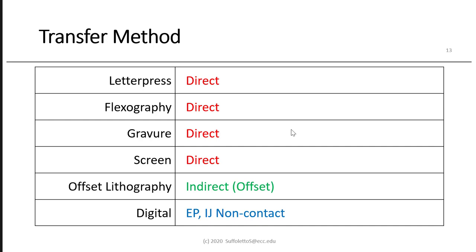For transfer method: letterpress, flexography, gravure, and screen printing are all direct. Offset lithography is indirect — 'offset' means image transfers from plate to blanket to paper. Digital (EP or inkjet) is non-contact. With contact processes, it's either impact with pressure or non-impact. In electrophotographic, you just need a gentle touch for the electrostatic charges to transfer. In a direct process, the plate image must be wrong-reading so it transfers as right-reading. In offset lithography (indirect), the plate is right-reading, transfers to the blanket as wrong-reading, and then to paper as right-reading again.